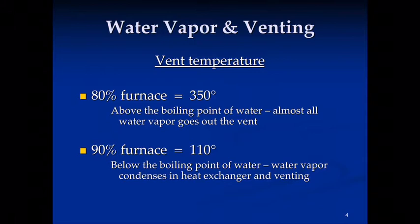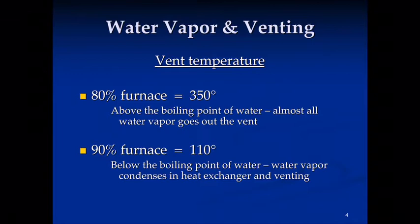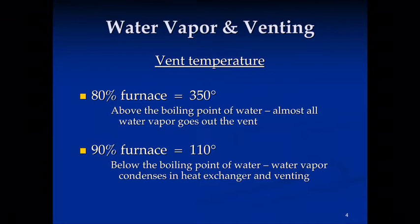Let's look at some typical temperatures we might deal with. On an 80% efficient furnace — whether it's 80, 81, 82, 83% and so on — flue gas temps are going to be somewhere in the 300 to 400 degree range, so roughly 350 degrees. Almost all of that water vapor should be going out the vent; there should be very little left that would not be exiting the vent system.